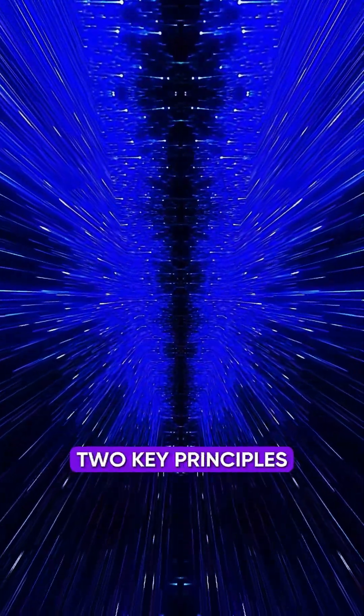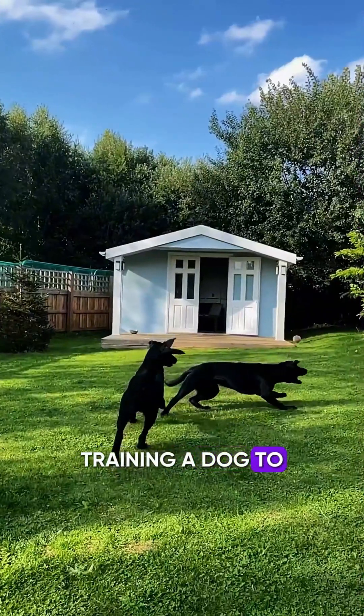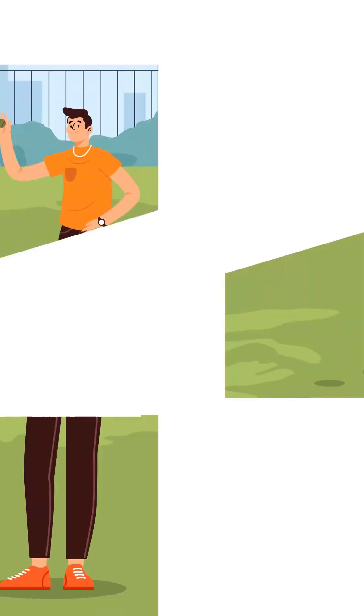AI learning comes down to two key principles, training and inference. Training a dog to fetch is just like training an AI model. Let's start with the training part.